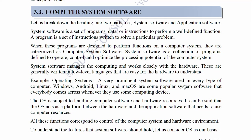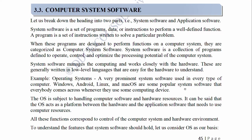3.3 Computer System Software. Let us break down the heading into two parts: System Software and Application Software. System software is a set of programs, data, or instructions to perform a well-defined function. A program is a set of instructions written to solve a particular problem. When these programs are designed to perform functions on a computer system, they are categorized as computer system software. System software is a collection of programs defined to operate, control, and optimize the processing potential of the computer system. System software manages the computing and works closely with the hardware. These are generally written in low-level languages that are easy for the hardware to understand.